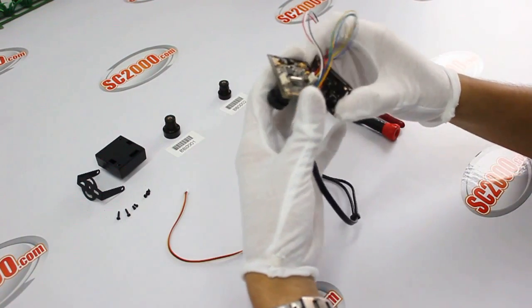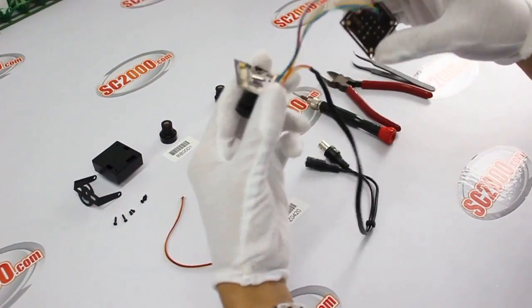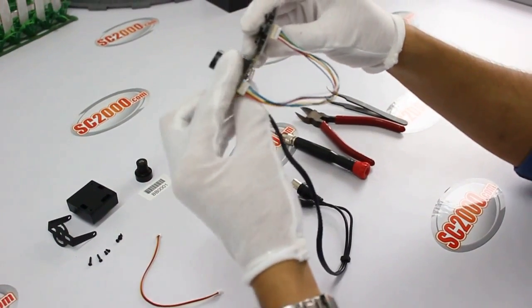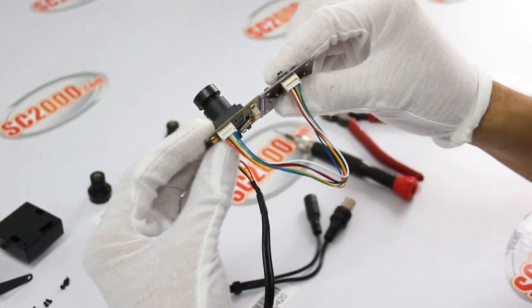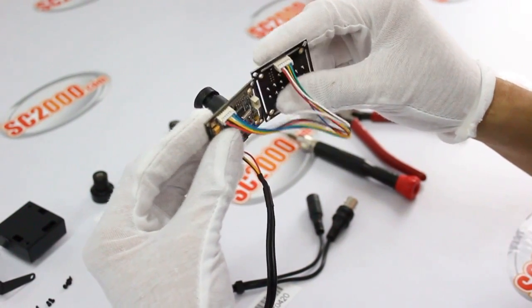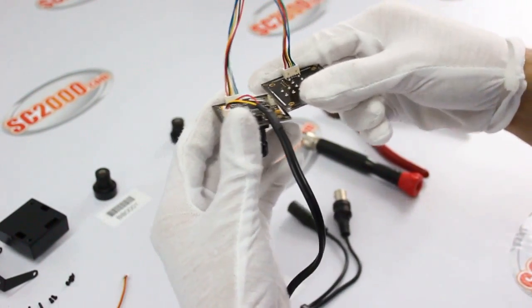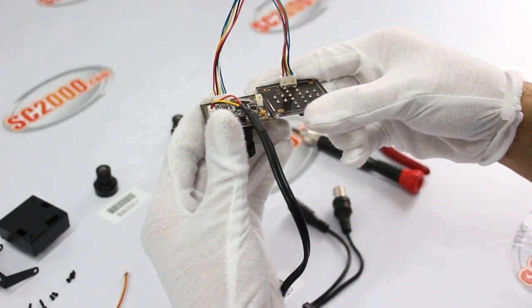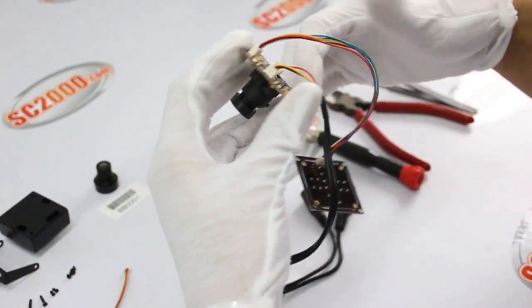The camera you can see now is one of our most popular board cameras, PZ0420. Before we start mounting the housing, we should observe the position of the cables of each interface. It is very important for the following operation.